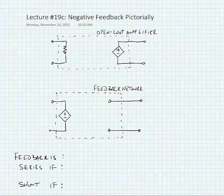We're going to look at a pictorial view of negative feedback. Let's say that I have the following open loop amplifier and its associated feedback network, and I make the following connections.